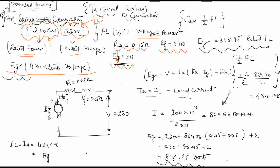EG will now equal 230 plus 434.78 into (0.05 plus 0.05) plus 2. This equals 230 plus 43.478, which equals EG at half the full load, which is 275.478 volts.